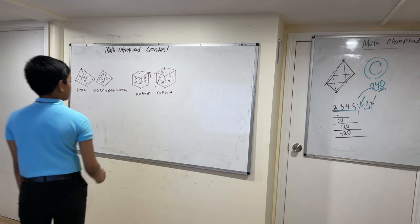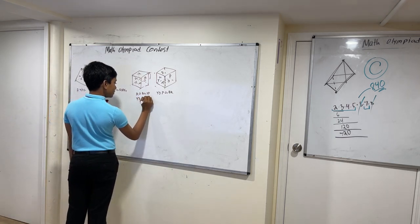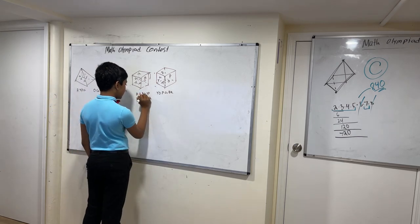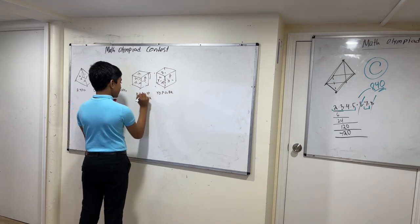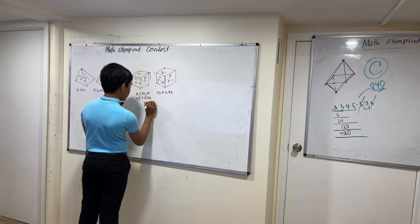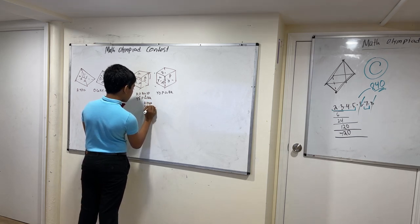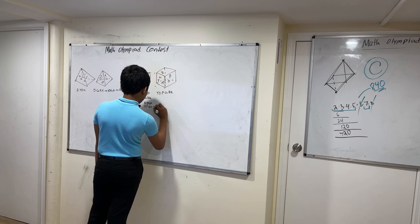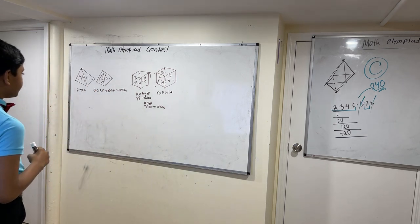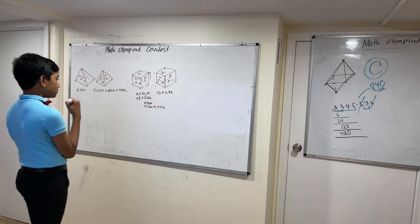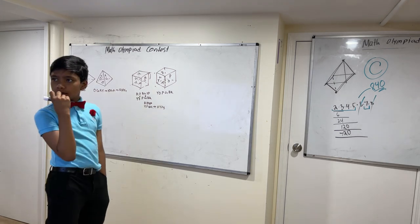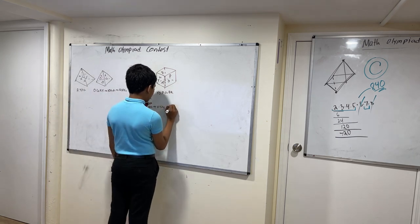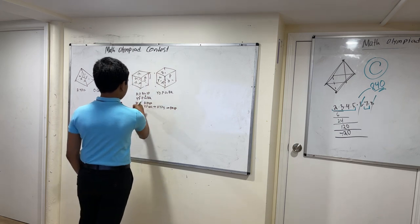So what transformation happens here? Two faces stay the same. Okay, I think it's twisted here. And then R-B-B-R-Y-B. So these two kind of swap.